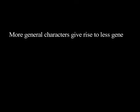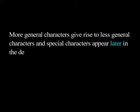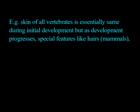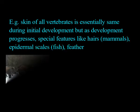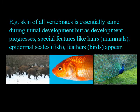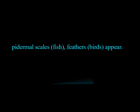More general characters give rise to less general characters, and special characters appear later in development. For example, the skin of all vertebrates is essentially the same during initial development, but as development progresses, special features like hairs in mammals, epidermal scales in fish, and feathers in birds appear.